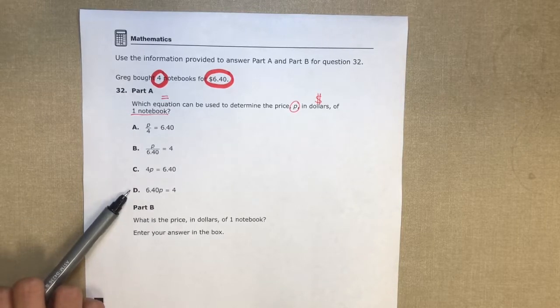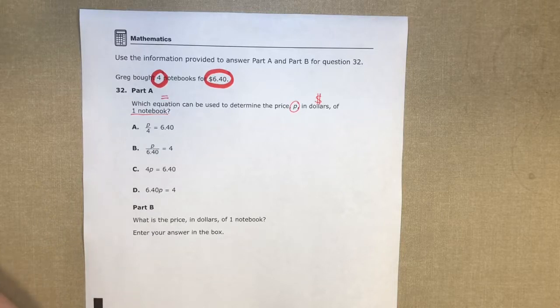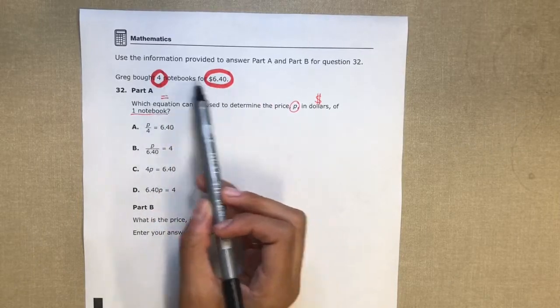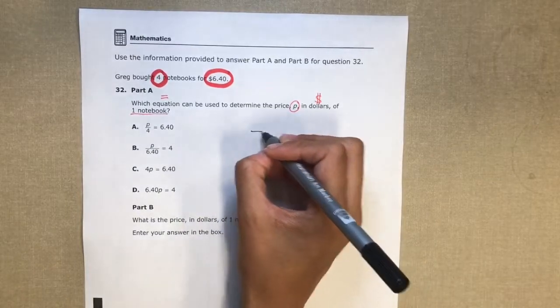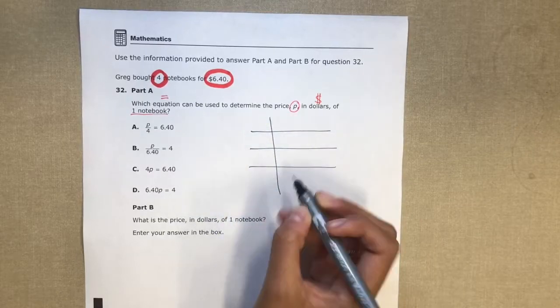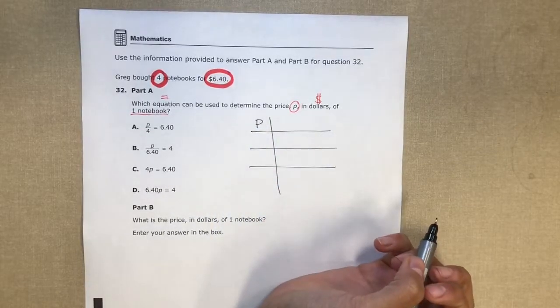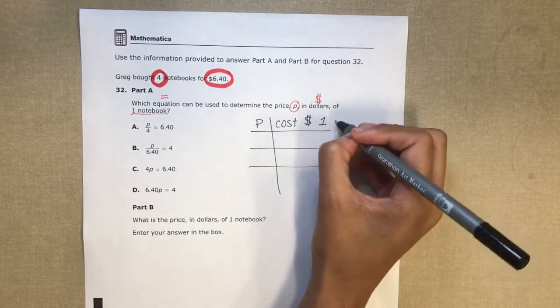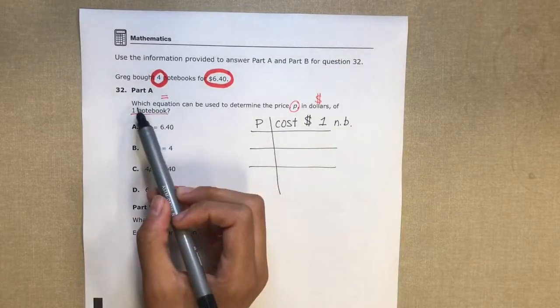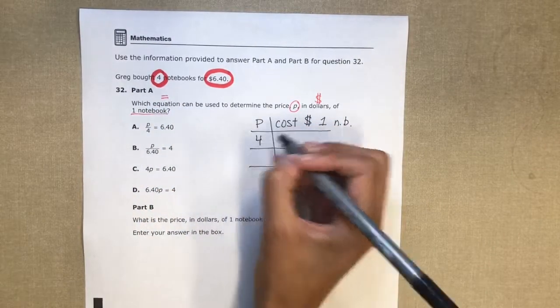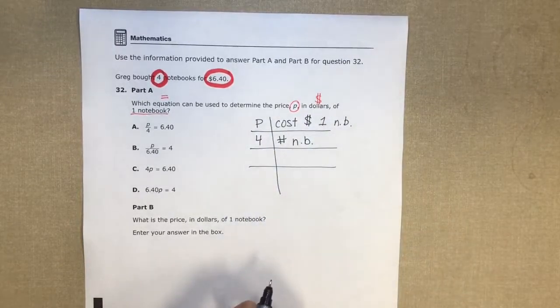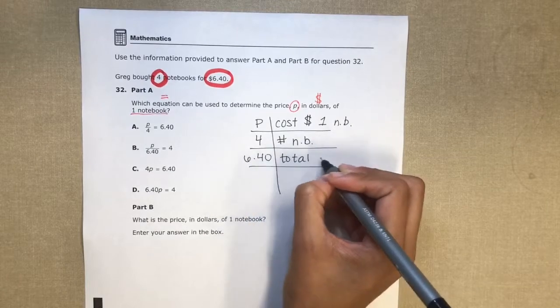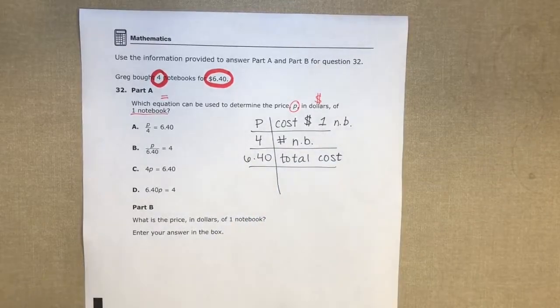A: P divided by 4 equals 640. B: P divided by 640 equals 4. C: 4 times P equals 640. D: 640 times P equals 4. Well, I'm gonna start by defining each of my variables, so I want to know what does the variable mean and what do each of the constants, the numbers, mean in this problem. I'm gonna make a little chart. I know that P is the cost in dollars of one notebook. What else do I know? Well, I know that four notebooks, so four is the number of notebooks, and 640 is the total cost.